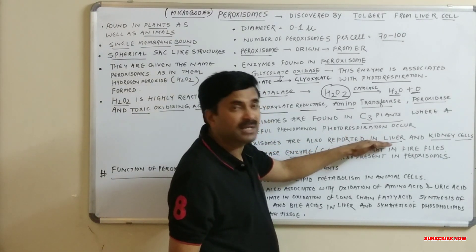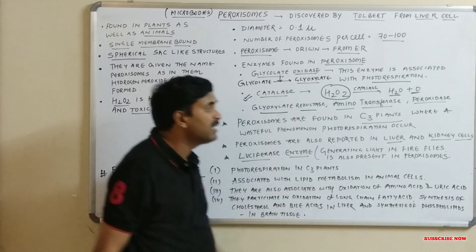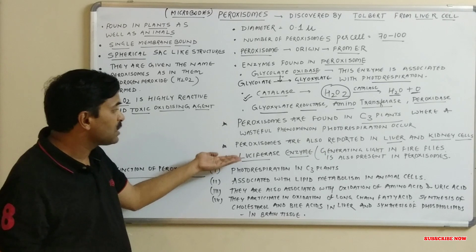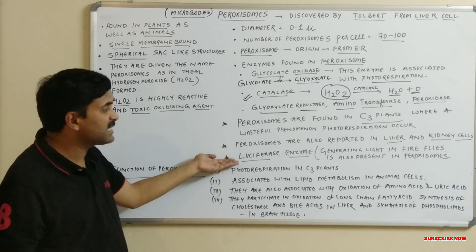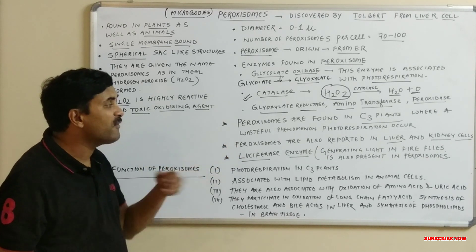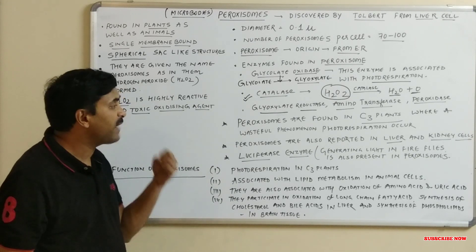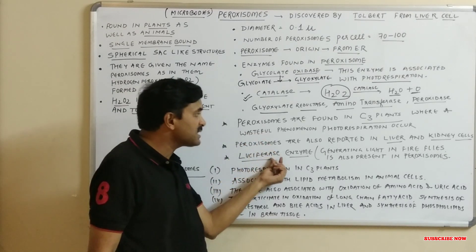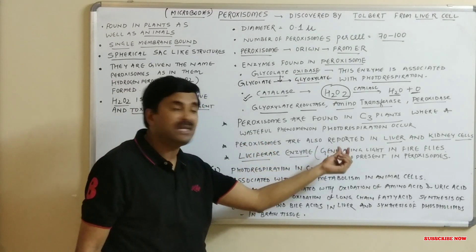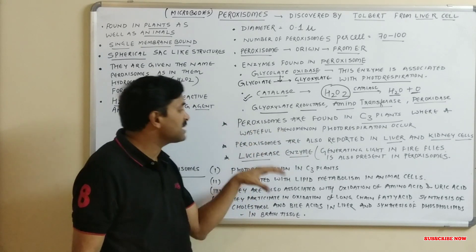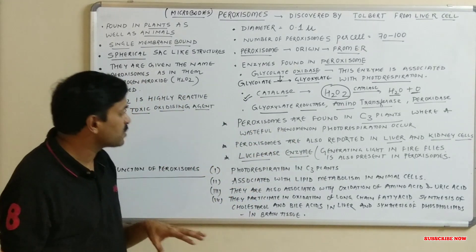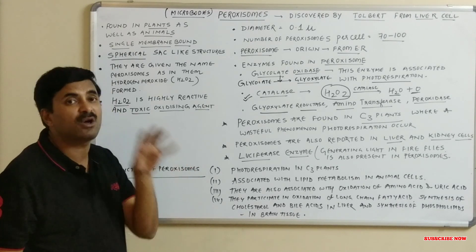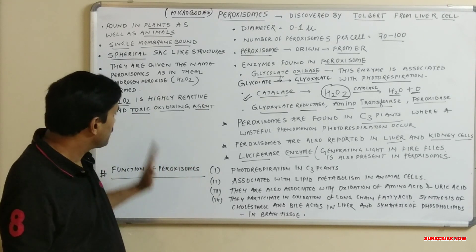In animals also, peroxisomes are reported, and in animal cells they are specially found in the liver and kidney cells. Additionally, the luciferase enzyme is present in fireflies. Fireflies produce light, and the luciferase enzyme generates this light in the fireflies. This enzyme is also associated with the peroxisome, so the luciferase enzyme is responsible for the lighting of fireflies.